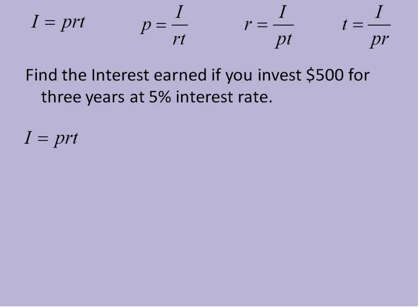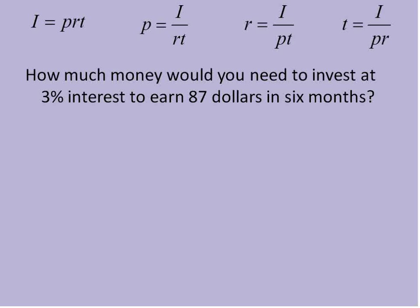I'll substitute in the principal, that's how much I invested, 500, the rate of 0.05 or 5%, and the time of three years. And then I just multiply 500 times 0.05 times 3 is equal to 75. Therefore, I earned $75 in three years from my investment.